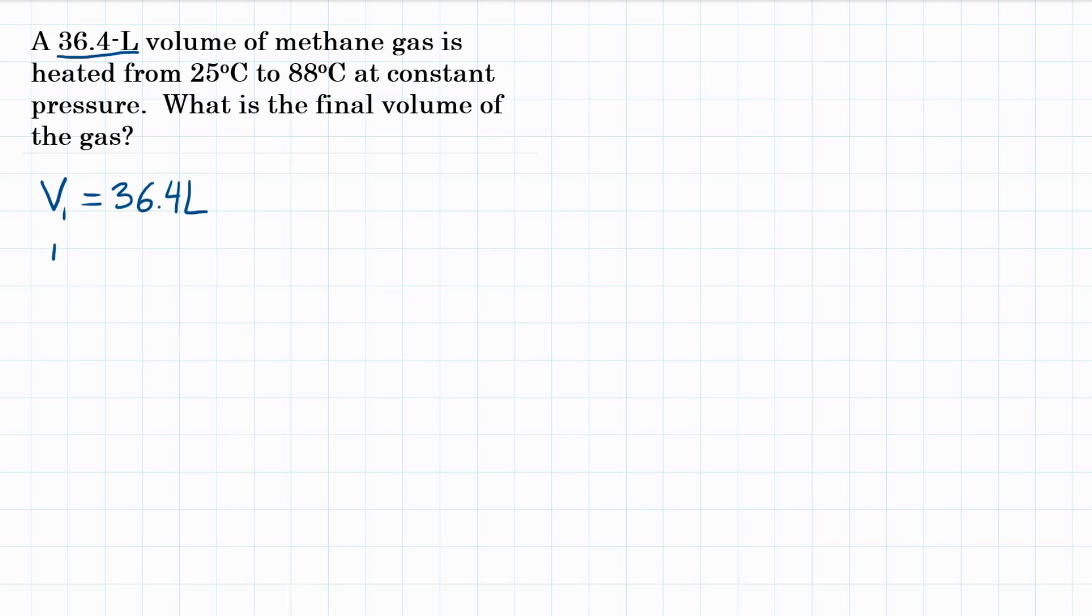We have two temperatures, so at time 1, 25 degrees C. And then at a second time, we'll call that T2, it is at 88 degrees C.